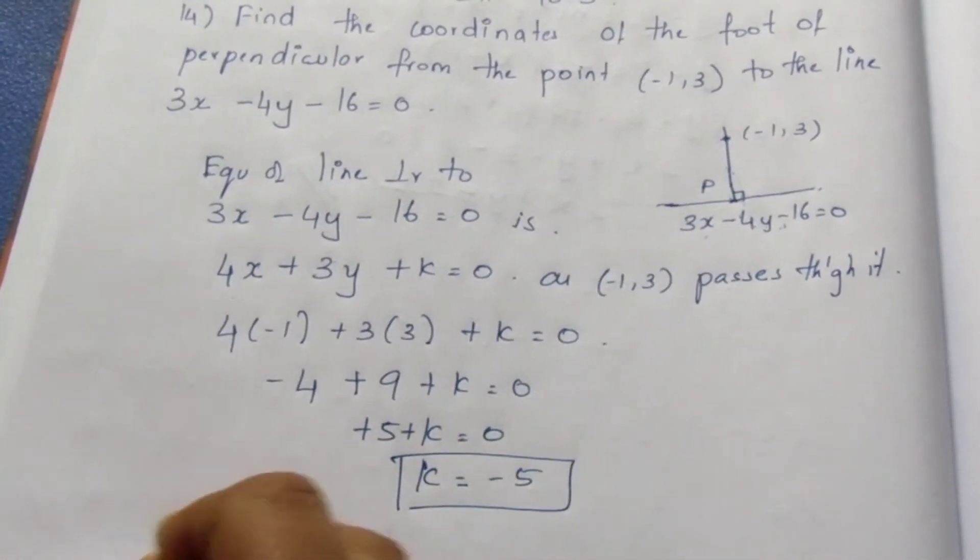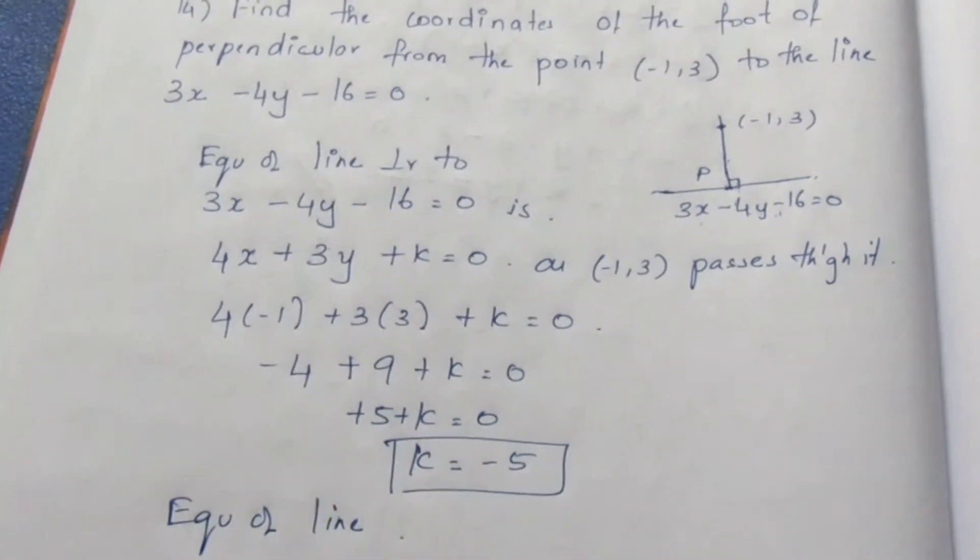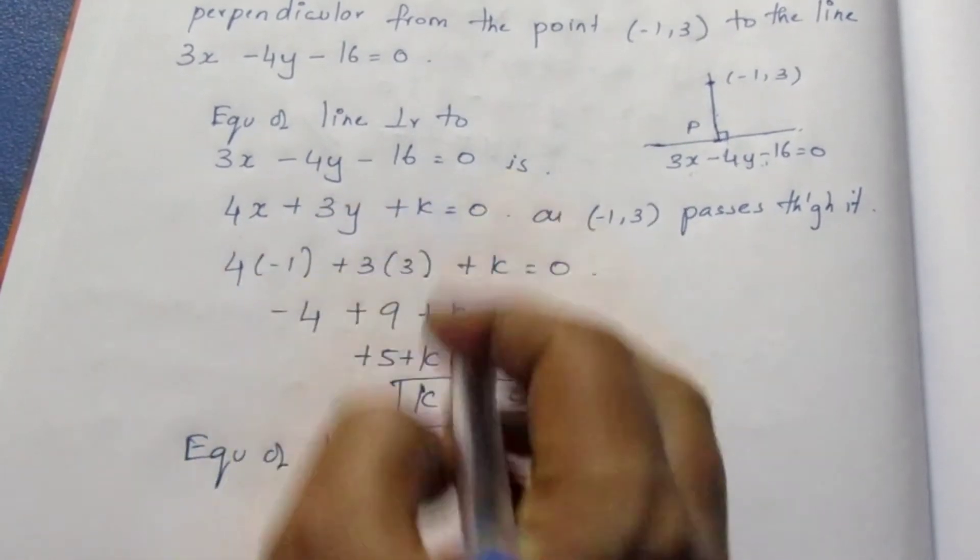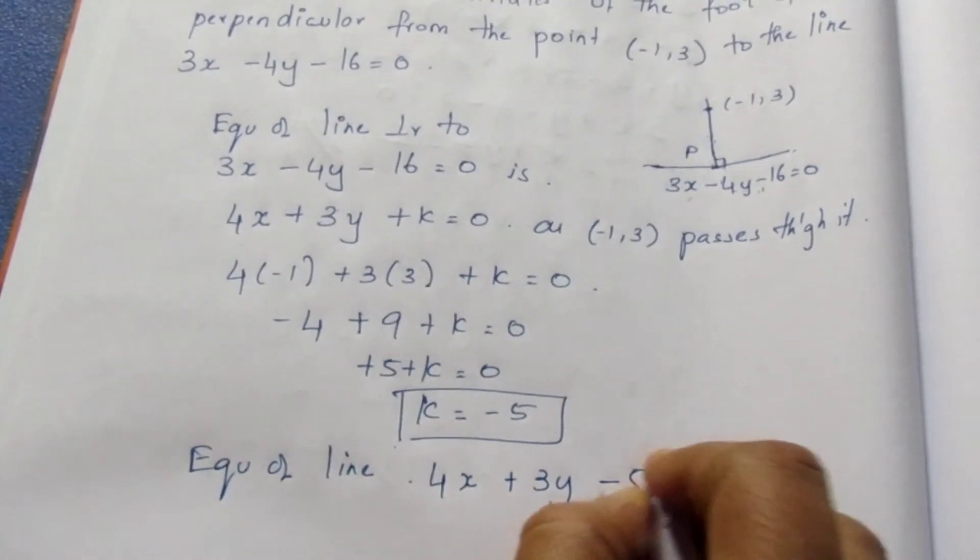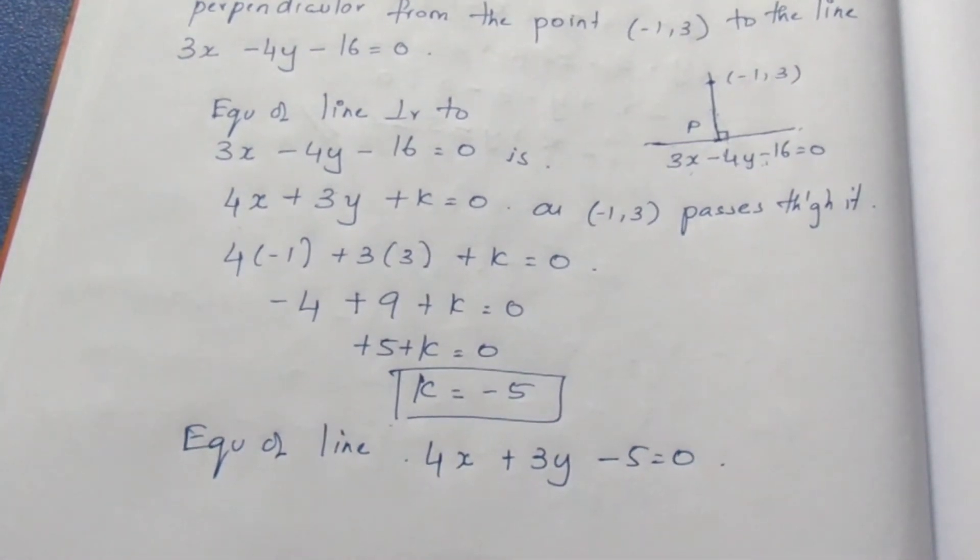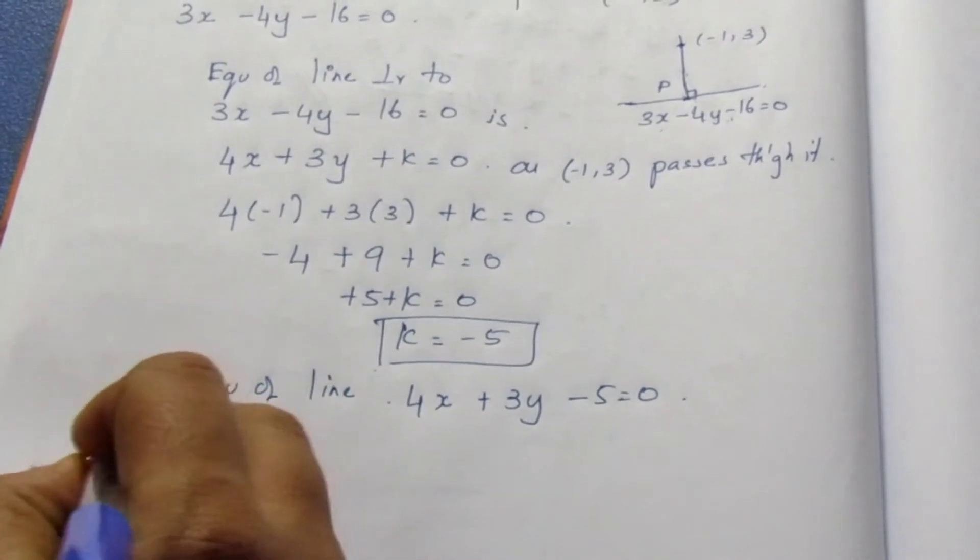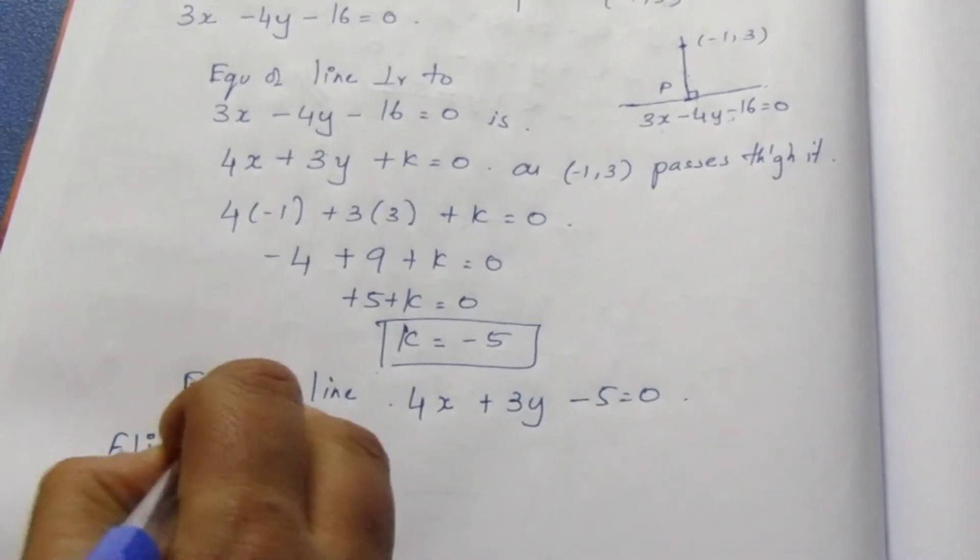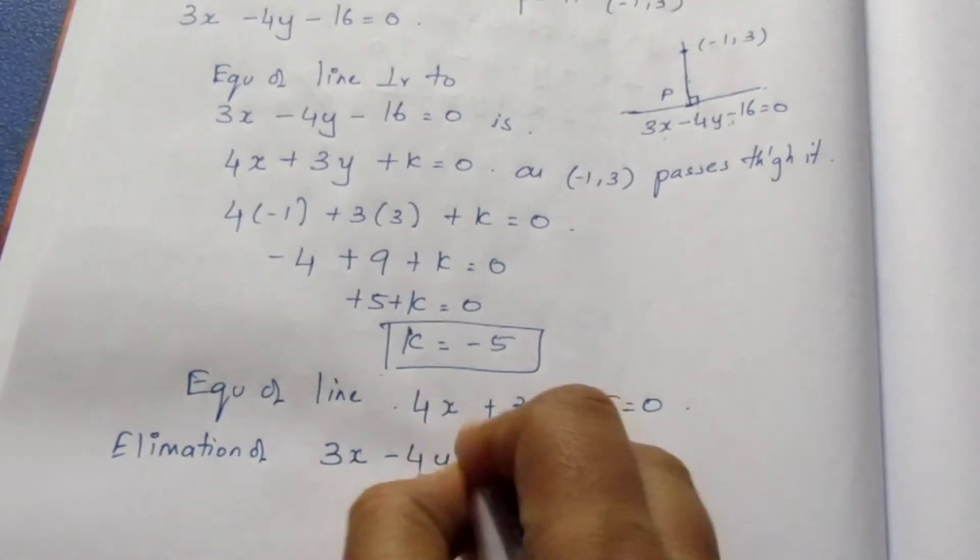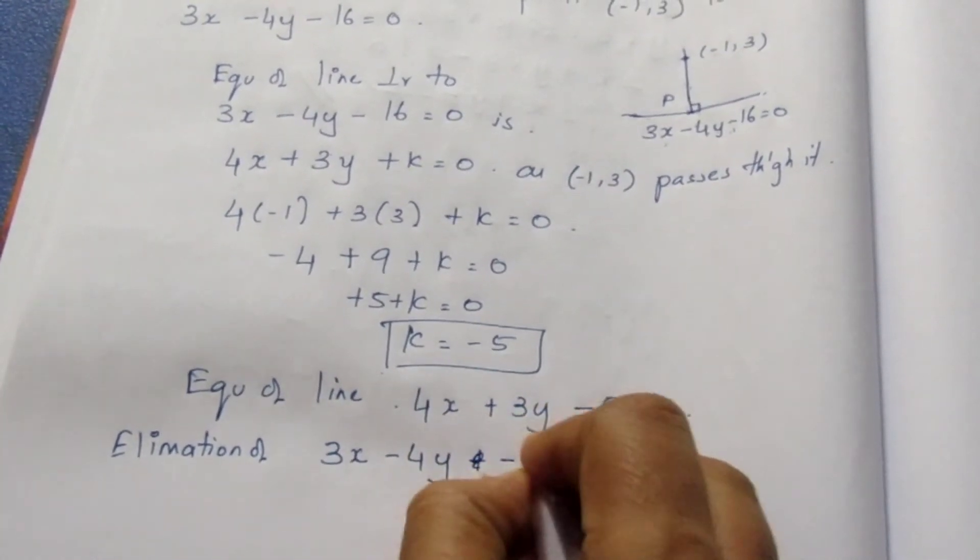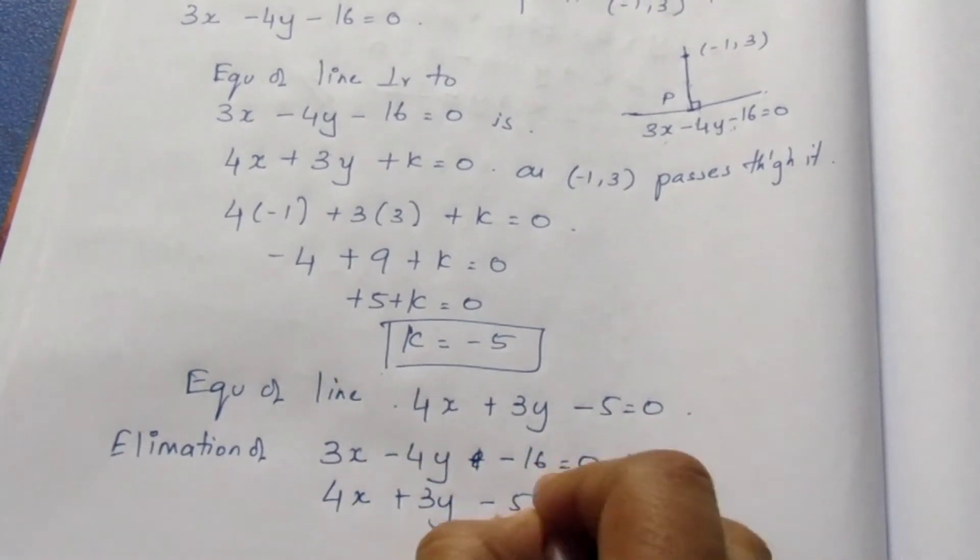So equation of the line will be, equation of the perpendicular line will be, just substitute the k value here, 4x + 3y - 5 = 0. Now to know the point of intersection, as I told before, elimination of 3x - 4y - 16 = 0 and 4x + 3y - 5 = 0.